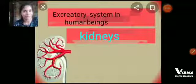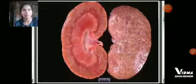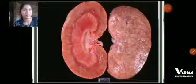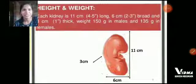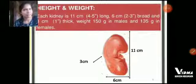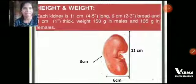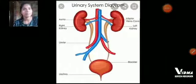Let's see the structure of the kidney. The kidney is red and pinkish in color and is bean-shaped. The height of the kidney is 11 centimeters, the width is 6 centimeters, and the thickness is 3 centimeters. The weight of the kidney differs for male and female — in males it is 150 grams and in females it is 135 grams.